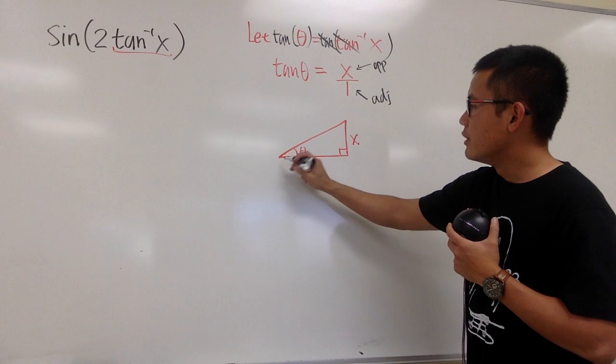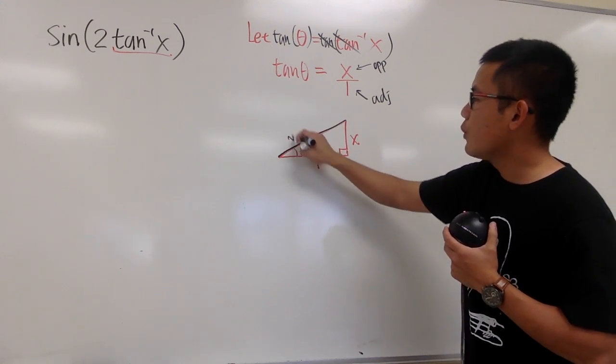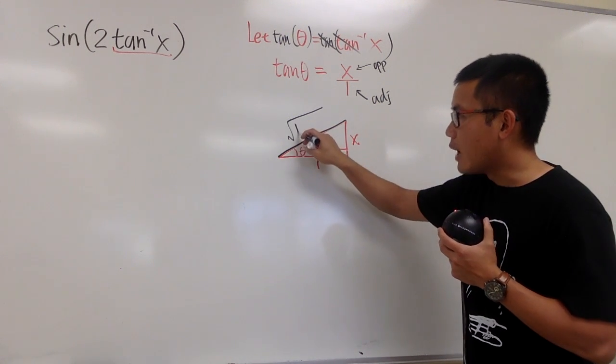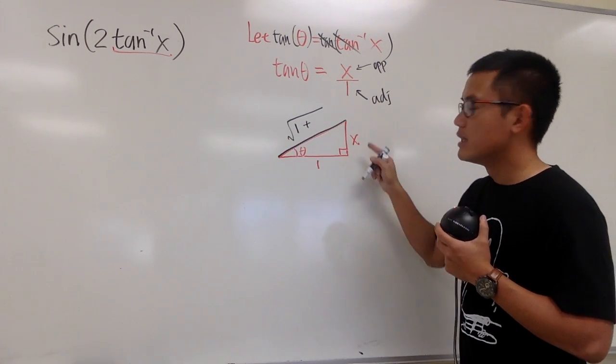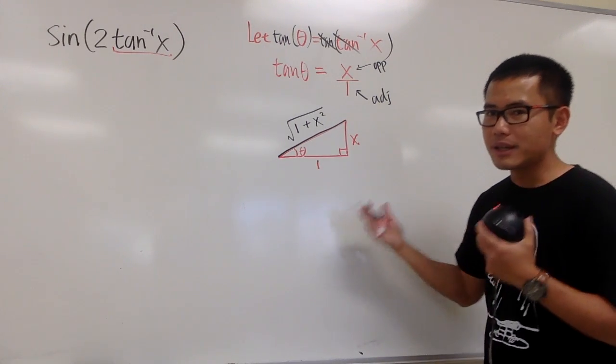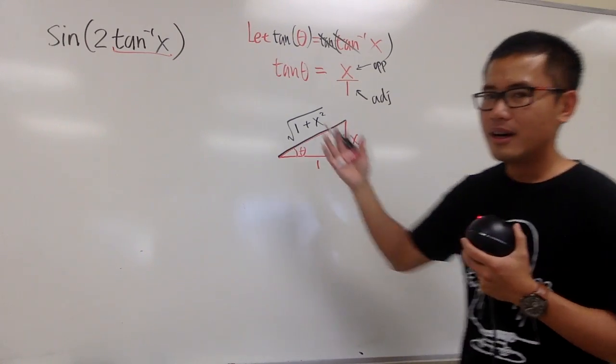The hypotenuse, which is this, is going to be—we take the square root. We are just going to do 1 squared, which is 1, and then we add it with this side squared, which is x squared. This is how we can complete this right triangle. And now, let's go back to here.